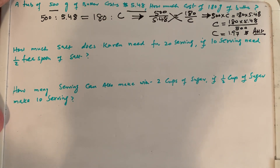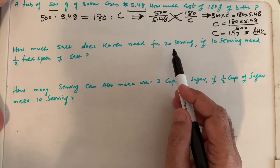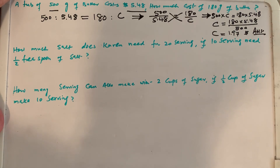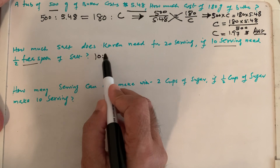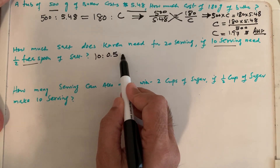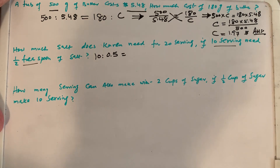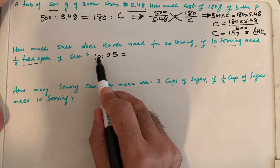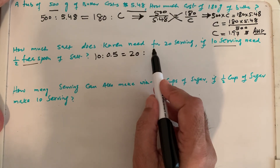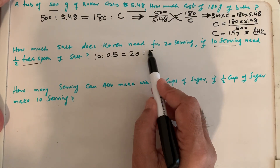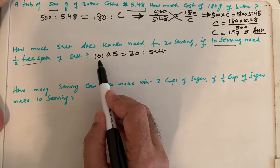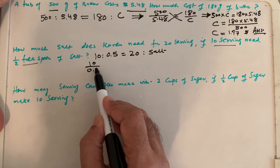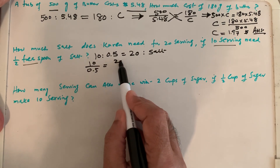Second question: how much salt does Karen need for 20 servings if 10 servings needs half a teaspoon of salt? So again, we equate the ratios. 10 servings is utilizing half a teaspoon, that is 0.5. They are asking for 20 servings — how much salt is required? Serving is listed first here, so serving is first on both sides. 20 servings versus the unknown salt quantity. The next step is to put it into fraction form: 10 divided by 0.5 equals 20 divided by salt.